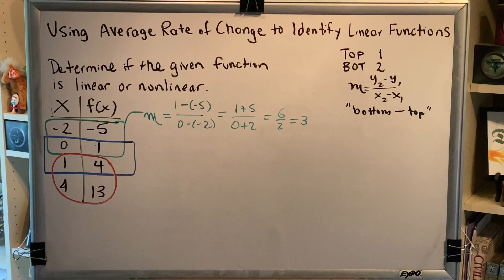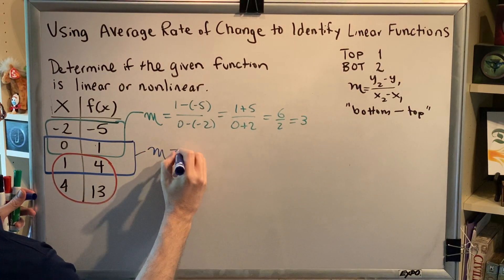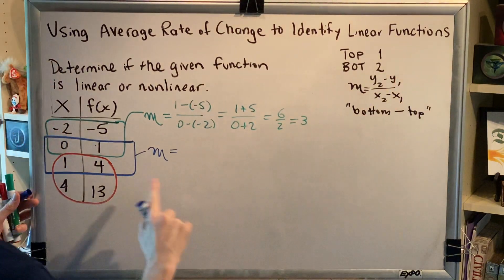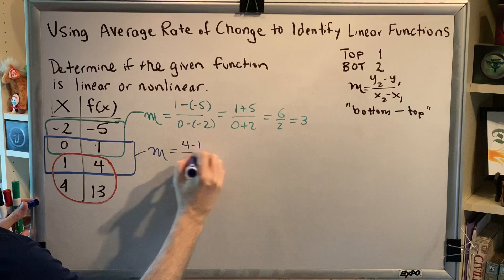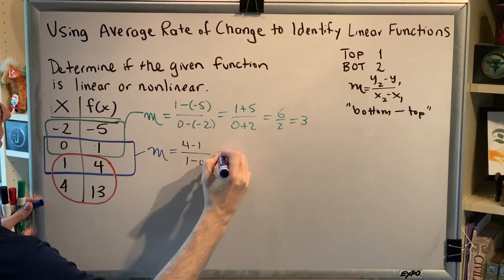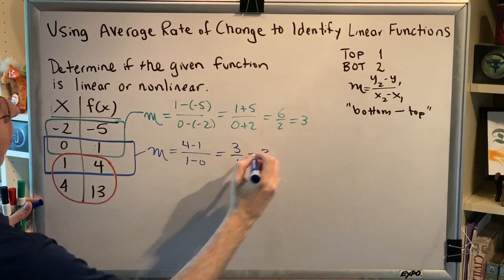All right, let's move on to our next pair of points, the ones that have a blue outline. Once again, we're going to do bottom minus top starting with the y's, so that would be 4 minus 1. And now the x's, 1 minus 0. 4 minus 1 is 3, 1 minus 0 is 1, 3 divided by 1 is 3.